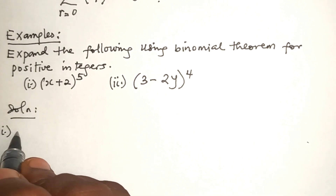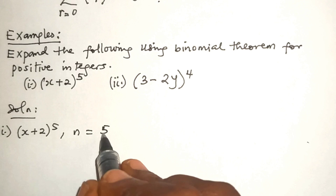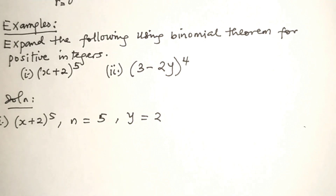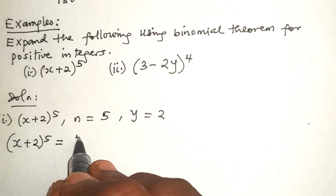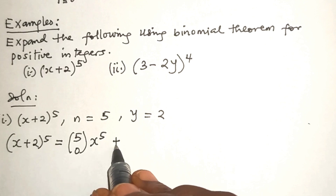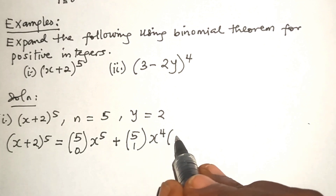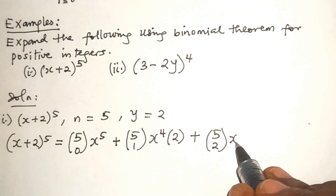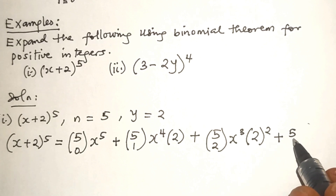For the first one, x plus 2 raised to power 5, n is equal to 5 and y is equal to 2. So we have x plus 2 raised to power 5 is equal to: 5-choose-0 times x to power 5, plus 5-choose-1 times x to power 4 multiplied by 2, plus 5-choose-2 times x to power 3.